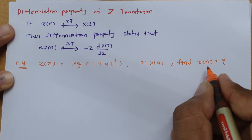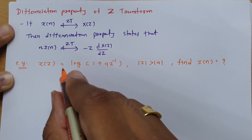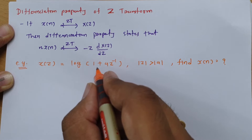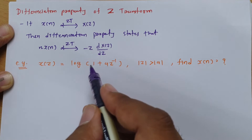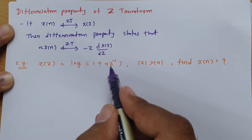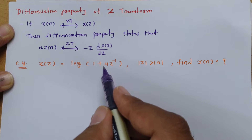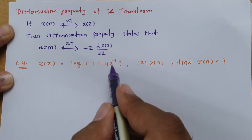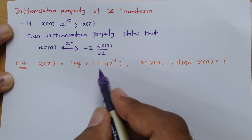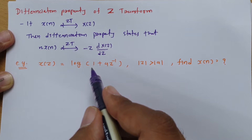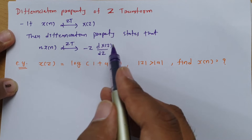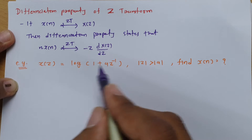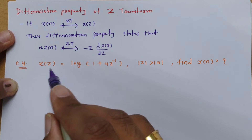We have to find the original signal X(n) given the Z-transform X(z) = log(1 + az⁻¹). Using the normal inverse Z-transform formula, it is next to impossible to solve this by direct mathematical calculation — it would take very long with many assumptions. But using the differentiation property, we can solve this problem.